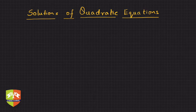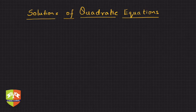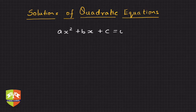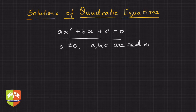Welcome again to the session on quadratic equations. In the previous session we understood what is meant by quadratic equations — why the word 'quadratic' is used. We learned that in Latin the word comes from 'quadratus' which means square, and that the general form of a quadratic equation is ax² + bx + c = 0, where a is not equal to 0 and a, b, c are real numbers. Now in this session we are going to understand what is meant by solutions of a quadratic equation.